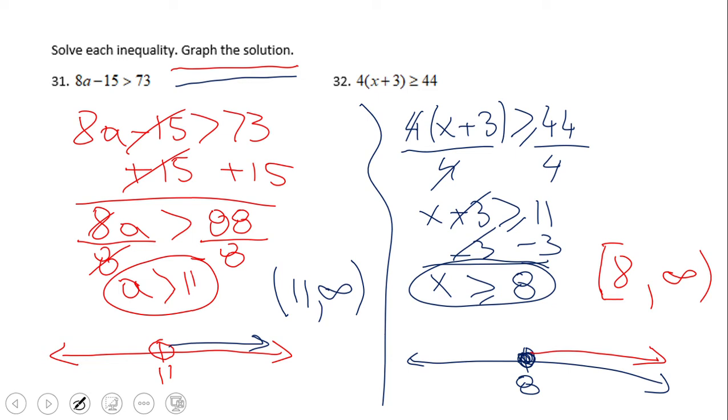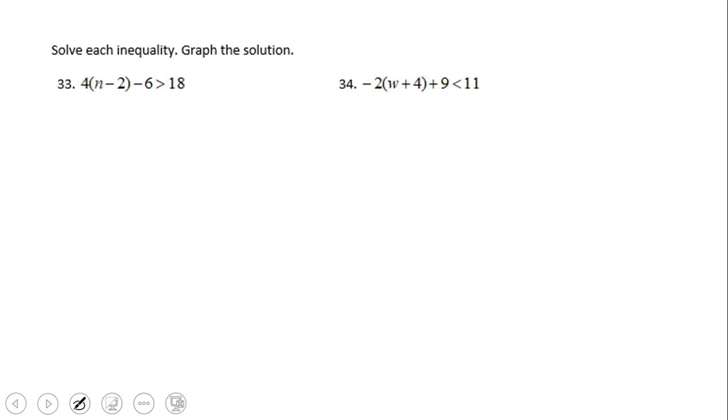You can also see the interval notation using a bracket because we have full dot equals, and always for infinity use parentheses. We have two more examples here. I'm gonna do number 33, and I would like you to try number 34. Let's take a look at number 33. We have 4 times the quantity n minus 2 minus 6 greater than 18. Always you want to make the problem simpler. If you do the distributive property, that's good. It can also be done differently: 4n minus 8 minus 6 greater than 18. Then we have these two terms here which we can combine them.